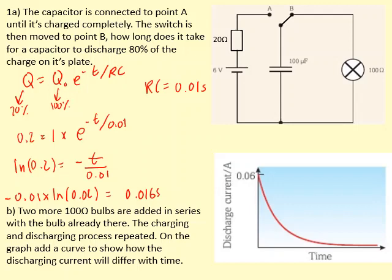In the second part of the question, you've added two bulbs in series, each with 100 ohms. So basically, you've increased the resistance to 300 ohms.